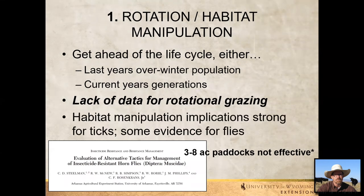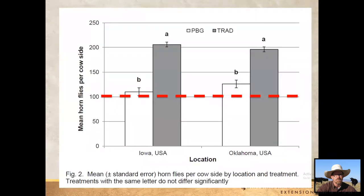There is some evidence that habitat manipulation can alter the effects of fly infestation. Two studies — one in Iowa, one in Oklahoma — looked at areas that had been burned. The white bars were areas with fire and the gray bars were areas without fire. Horn fly numbers were about half where there had been some fire, probably because fire disrupted habitat, disturbed fecal pies, and moved animals to grazed burned areas. We need more research in this area.